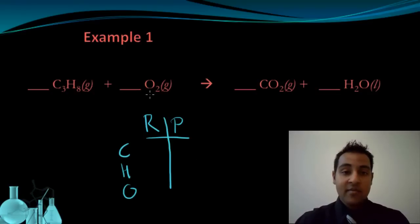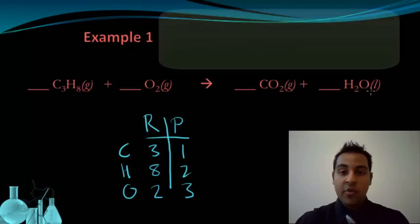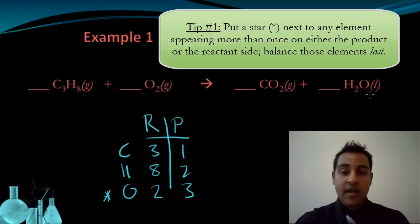We're going to count the number of atoms that show up on the reactant side first. We have three carbons, eight hydrogens, and two oxygens. If we look at the product side next, you'll see that there's one carbon, two hydrogens in the water, and then a combined three oxygens — two from the carbon dioxide and one from the water. The first tip for balancing equations is to put a star next to any element that appears more than once on the same side of the reaction. Oxygen appears twice on the product side, so we're going to put a star next to it, and that's going to tell us we're going to balance this one last.